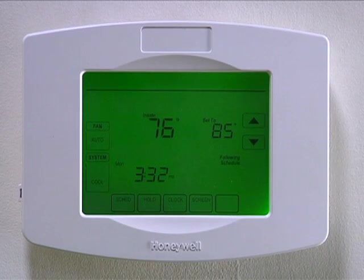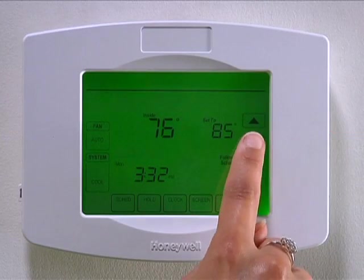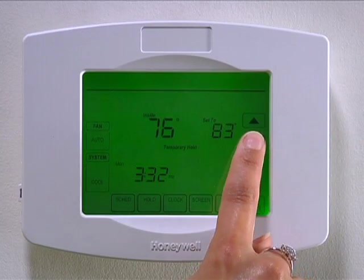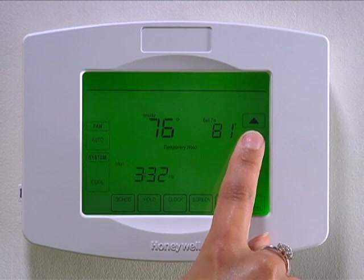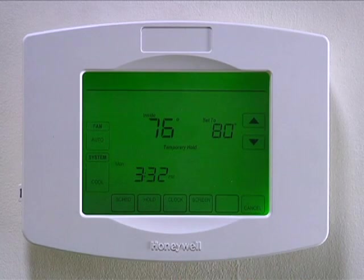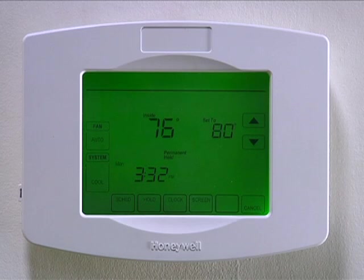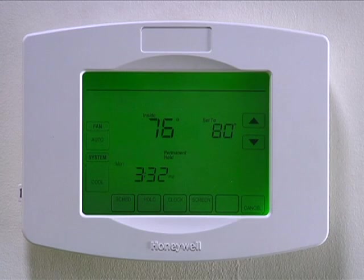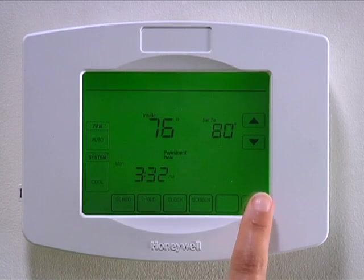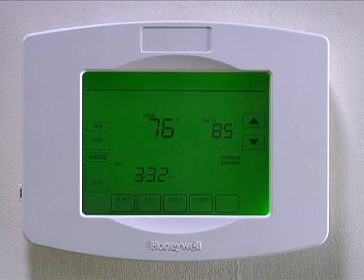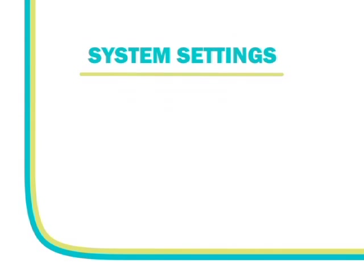To permanently override the programmed schedule, set the smart thermostat to the desired temperature and press hold. This will turn off the programmed schedule. Whatever temperature you set will be maintained until you manually change it or press cancel to return to the programmed schedule.